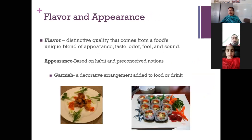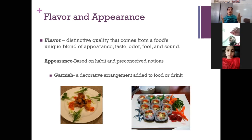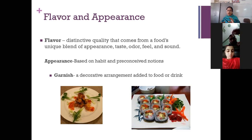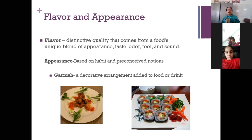Flavor is a distinctive quality that comes from a food's unique blend of appearance, taste, odor, feel, and sound. Appearance is based on habit and preconceived notions — whatever you have heard from your ancestors, those conceptions are inscribed in your mind. For example, if you expect the color of a crust to be brown, only then will you like it. Garnish plays a very important role in appearance, as it is a decorative arrangement added to food or drink to make it more appealing.